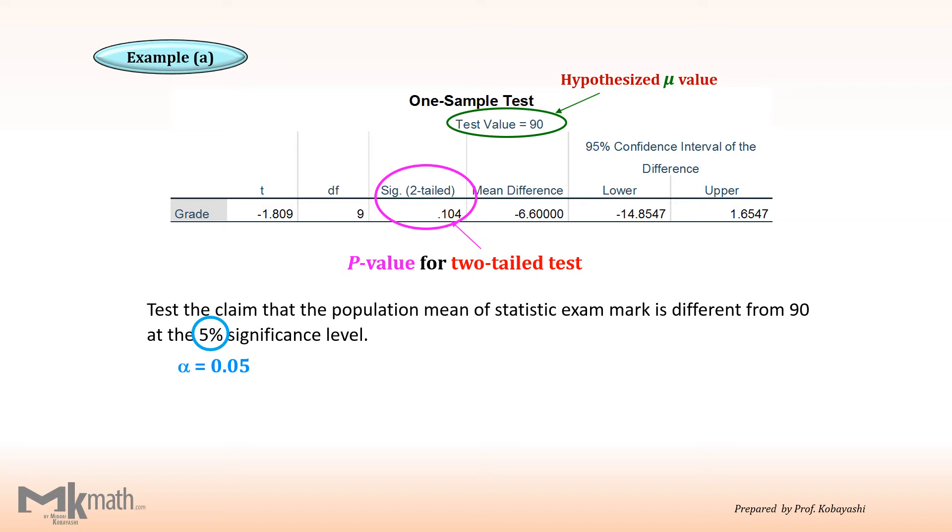Now, criterion for p-value approach is this. If p-value is less than or equal to alpha, then we reject the null hypothesis. While if p-value is greater than alpha, we do not reject the null hypothesis.